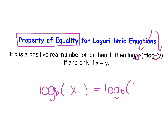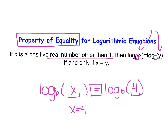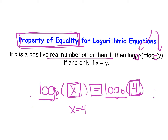If you have log base b on both sides — say, x on this side and 4 on this side — and you have the same log on both sides with nothing else, then what's inside of these logs needs to be the same. x has to be equal to 4, because it's an equation and both sides need to match. So if you have the same log base on each side and nothing else outside, you can just set the insides equal to each other based on the property of equality for logarithmic equations.